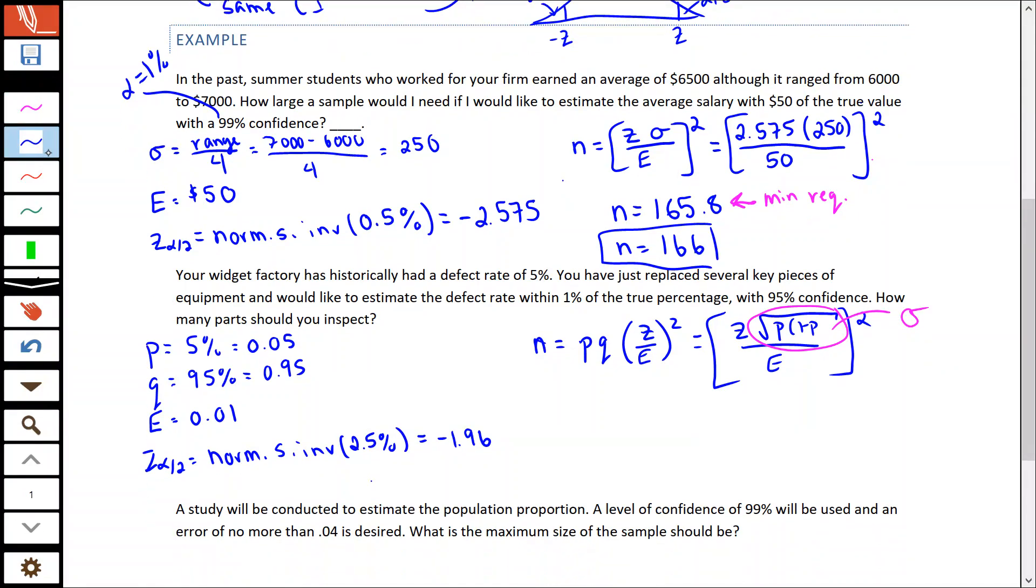It doesn't really matter which one you use, you're going to get the same answer. So we're going to have that 0.05 for P, 0.95 for Q, just 1 minus P, our Z was the 1.96 and our error 0.01. I'm going to square that. And I'm going to get for my N, 1824.76.